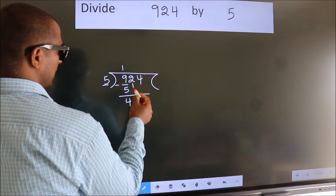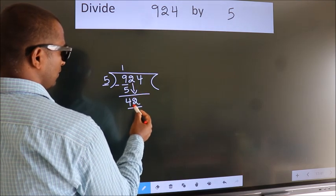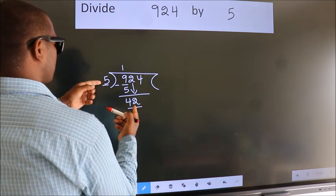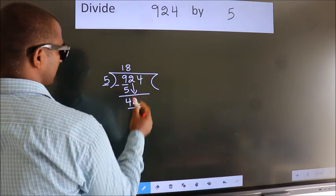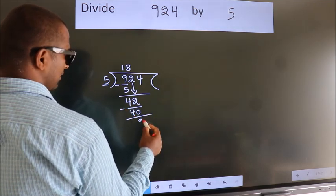After this, bring down the beside number. So, 2 down. So, 42. A number close to 42 in the 5 table is 5 times 8, 40. Now, we subtract. We get 2.